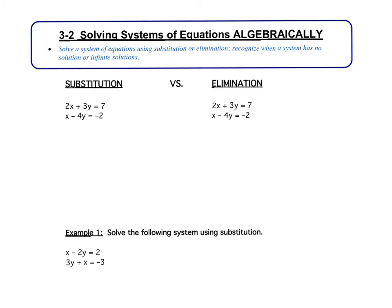In today's video, we are going to talk about solving systems of linear equations algebraically. In the first video of the chapter, we looked at solving systems graphically — we had two linear equations and found the point of intersection. Now today, we're going to solve those same systems algebraically. There are two different methods: the first one is substitution, the second one is elimination. You've seen both of these before, so we're going to review each and do a few example problems together.